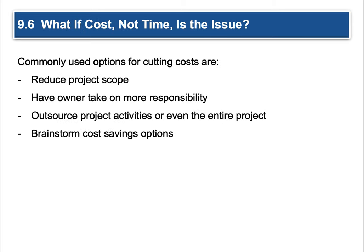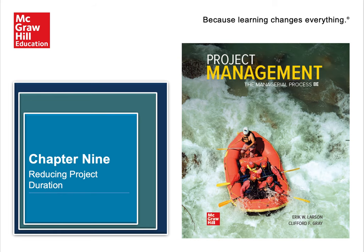What if costs, not time, is the issue? Commonly used options for cutting costs include reducing the project scope — we've talked about that. Have an owner take on more responsibility — have someone you're already paying a salary to do more, though you can overwork your people. Outsource project activities or even the entire project; find somebody with a more competitive advantage. And brainstorm ways to have cost savings — at some point near the end, have a spirited discussion with your team about whether there are ways to make this more efficient. I give points for clever. Reducing your project duration helps direct costs and gives your project a higher likelihood of being approved. That's a very quick look at Chapter 9, reducing project duration. It does not replace the reading, so make sure you're getting on that.